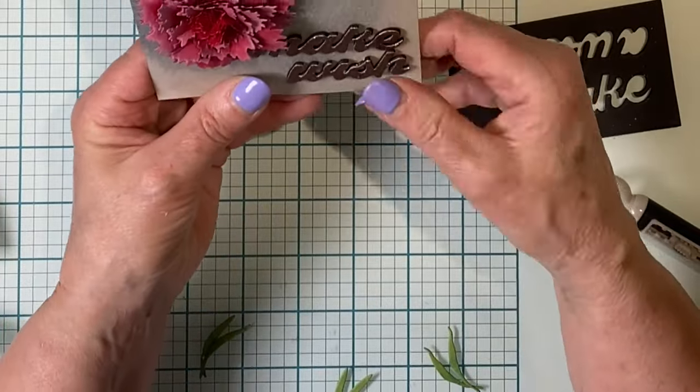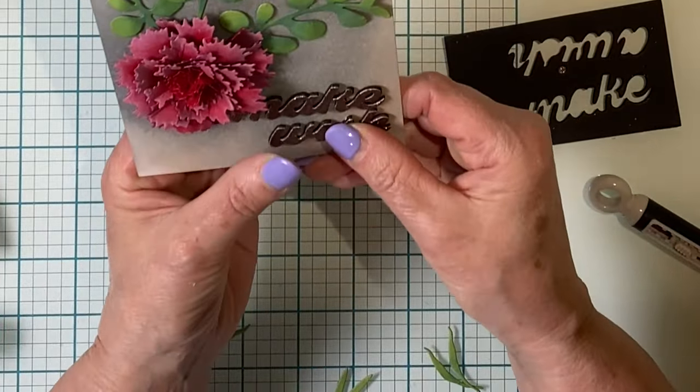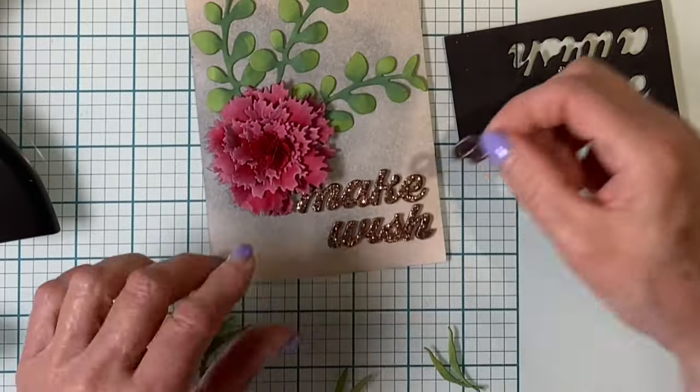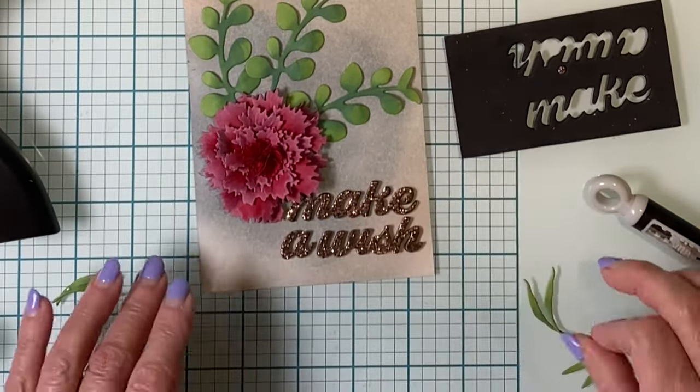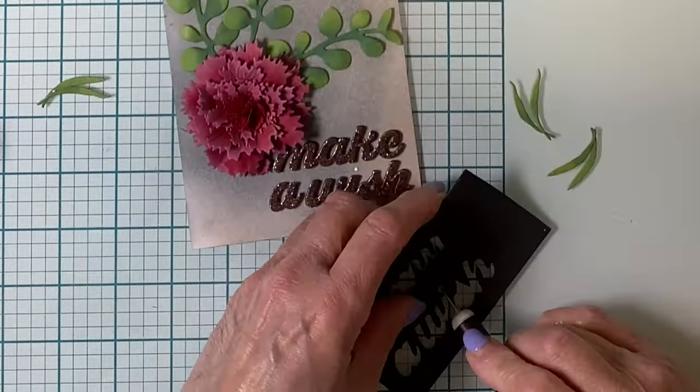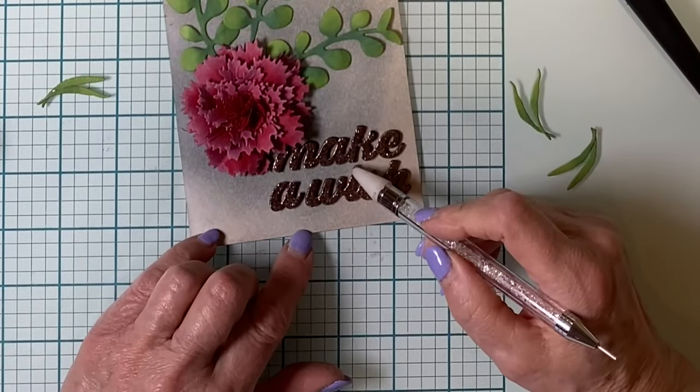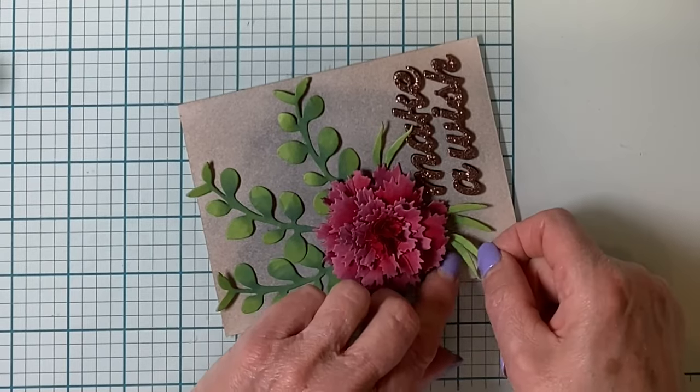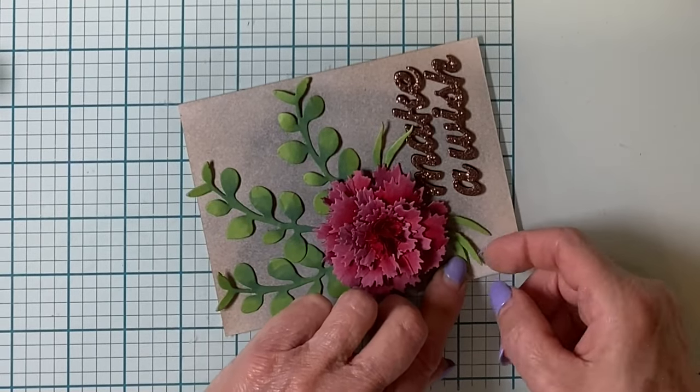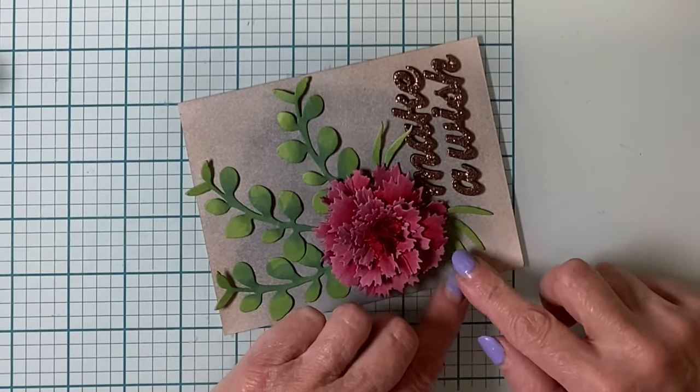For whatever reason, I have a better chance of seeing if my sentiment is on straight if I hold my panel up. After the rest of the sentiment is adhered, I can go back to the foam and remove the dot for the letter I where I left it to dry completely. Because the adhesive was placed in the center of the carnation, it is easy to tuck in the pairs of slender leaves.